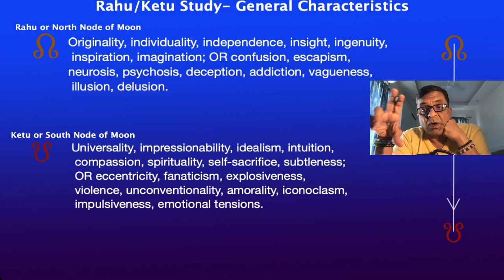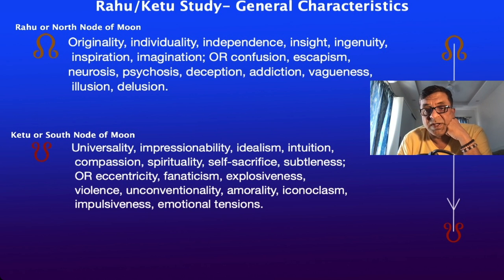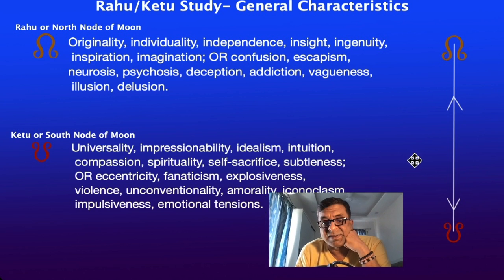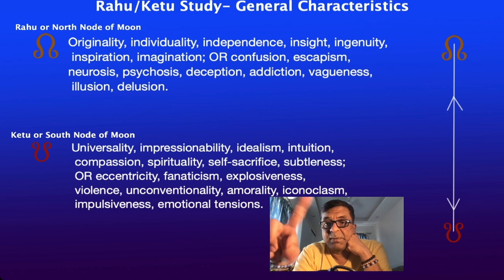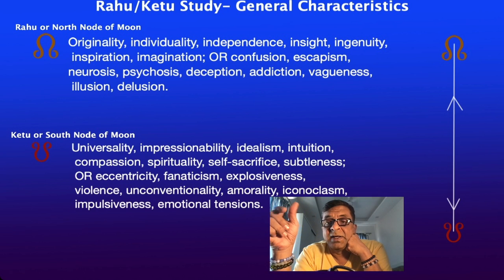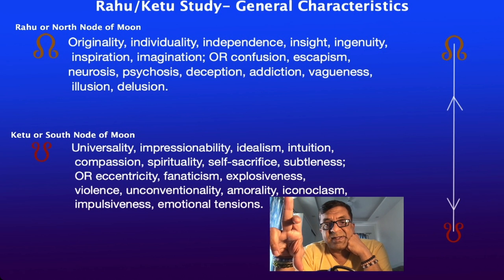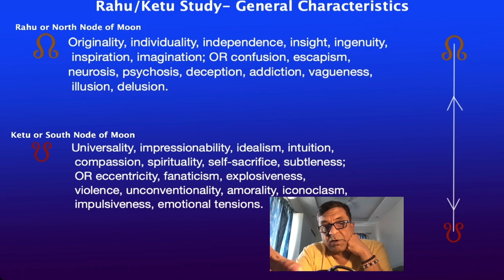Rahu and Ketu function as an axis — 180 degrees apart — and can play out in any pair of opposite houses: 1 and 7, 2 and 8, 3 and 9, 4 and 10, and so on. This axis becomes a definition point of where in your life — across different houses — you are seeking these two opposing aspects.